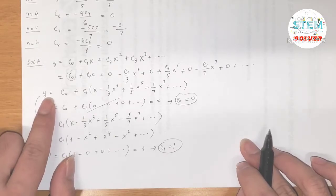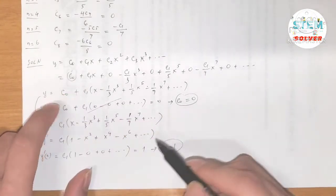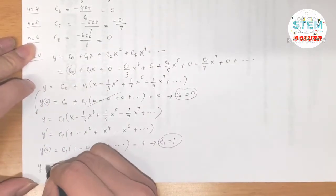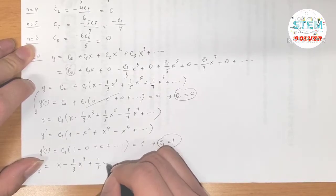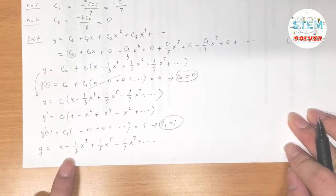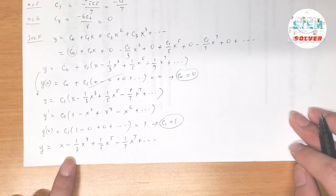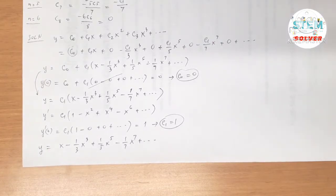Going back to the general solution with c₀ = 0 and c₁ = 1, our final solution is y = x − x³/3 + x⁵/5 − x⁷/7 + … That's it! If you found the video helpful, feel free to give it a like, share, and subscribe to the channel. Hit the bell so you won't miss anything — see you next time!